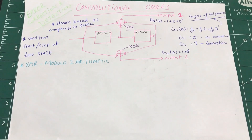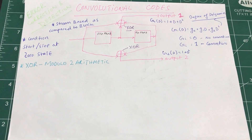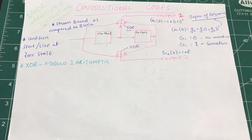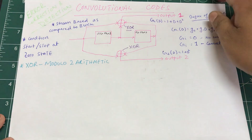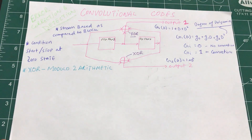In our error correction and detection series, we're going to look at another set of codes known as convolutional codes. These codes are widely used in wireless systems like Wi-Fi and GSM. They fall under a scheme called forward error correction, where a receiver can both detect and correct errors.